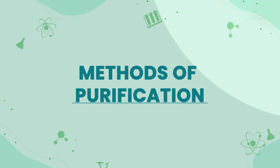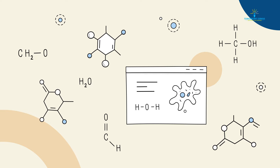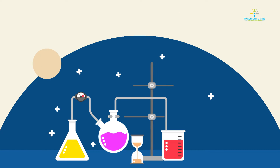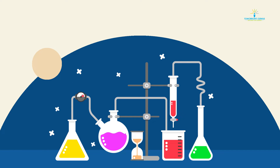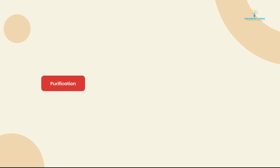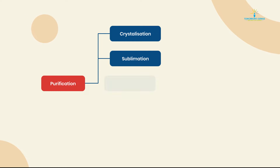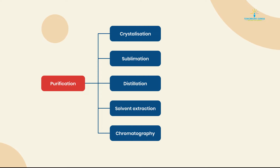Methods of purification. The chemical reaction looks very simple on paper, but let's have a look. This is the schematic of reaction flasks and how the reaction takes place. The bigger task is to get the pure compound from the reaction mixture. Apart from filtration, purification of an organic compound can be achieved by many methods: crystallization, sublimation, distillation, solvent extraction, and chromatography.